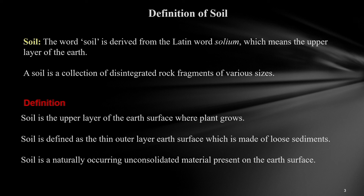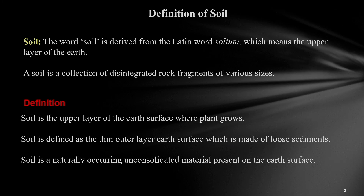For an agriculture engineer, the soil is defined as the upper layer of the earth surface where the plant grows. Whereas for a geologist, soil can be defined as the thin outer layer of the earth surface which is made of loose sediments. Similarly, for a geotechnical engineer, soil is a naturally occurring unconsolidated material present on the earth surface.